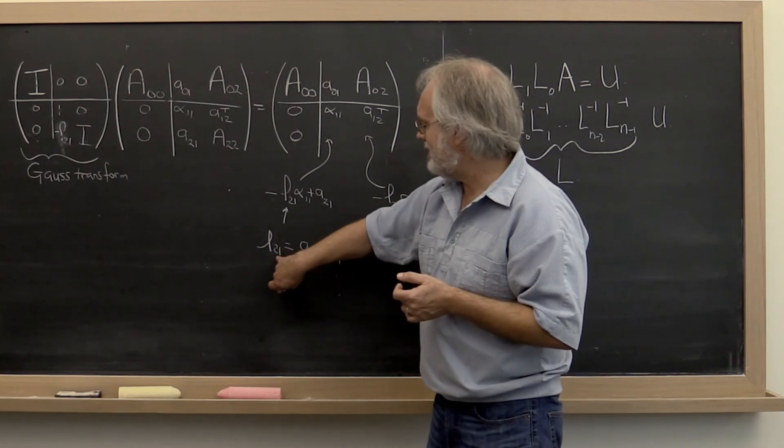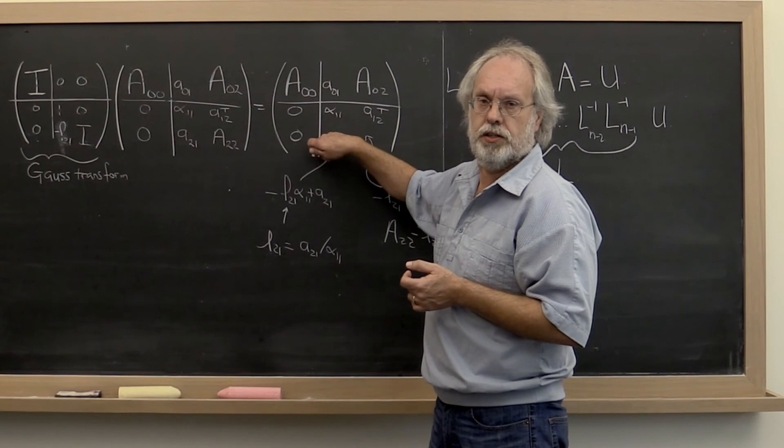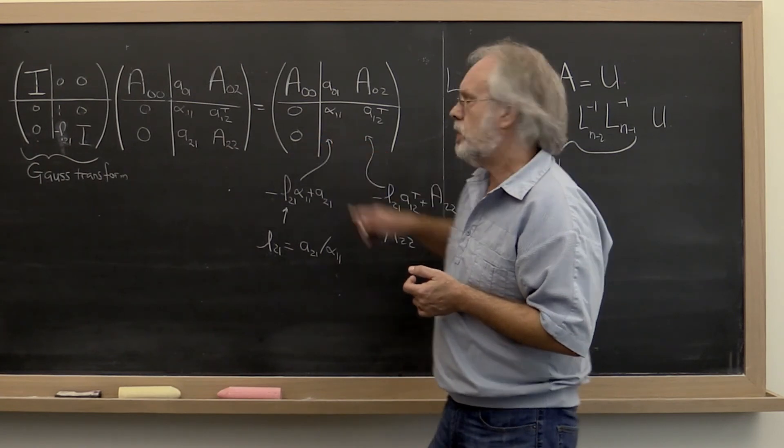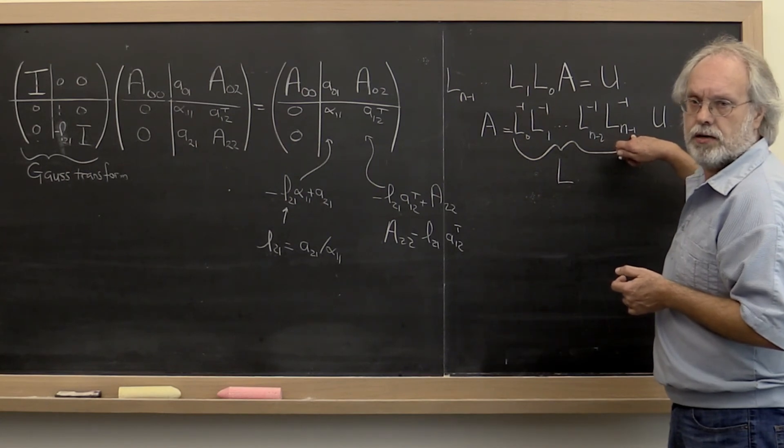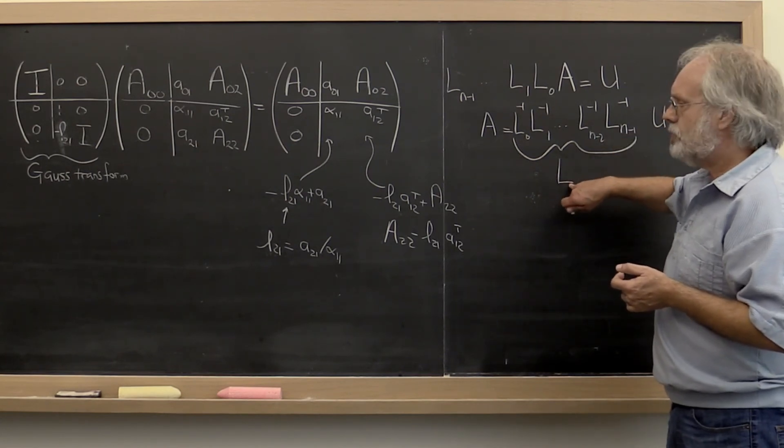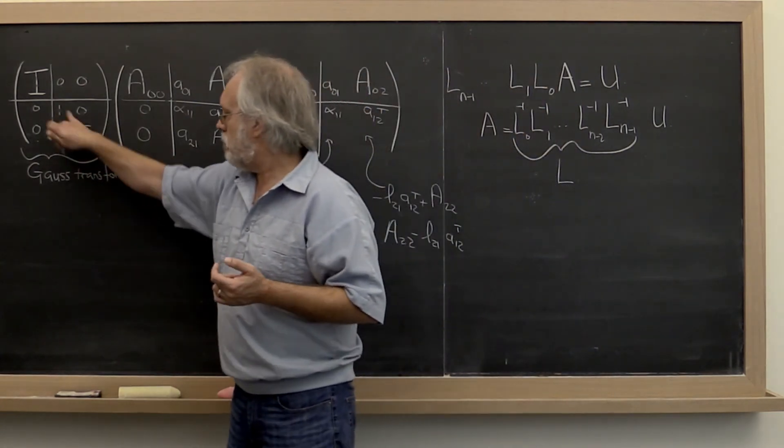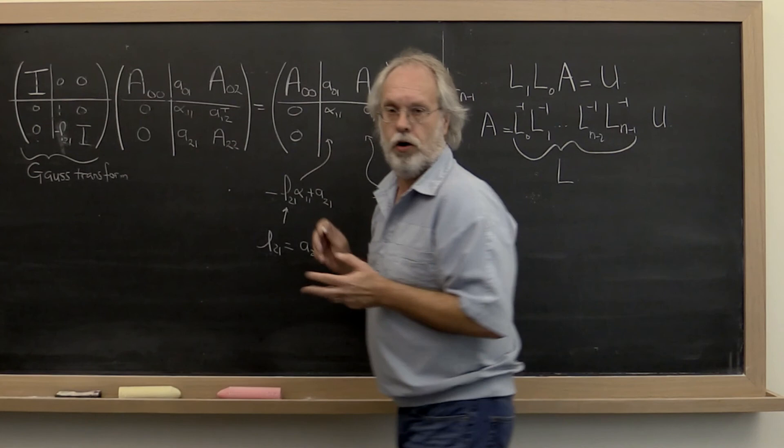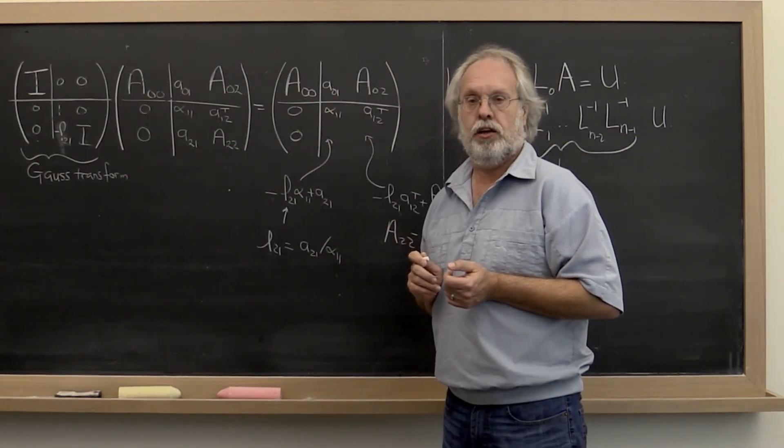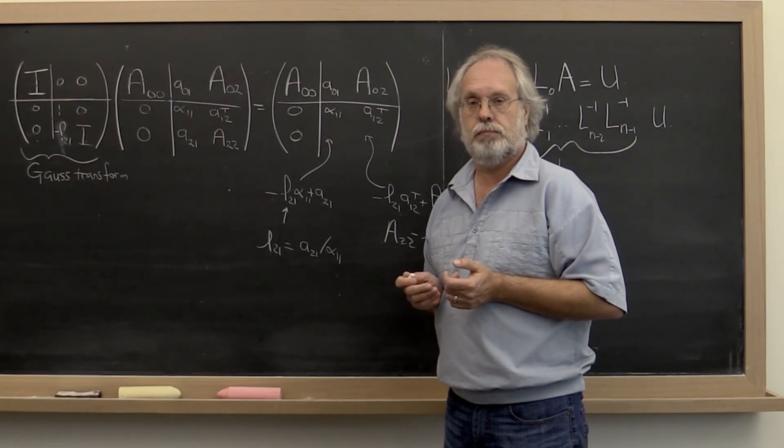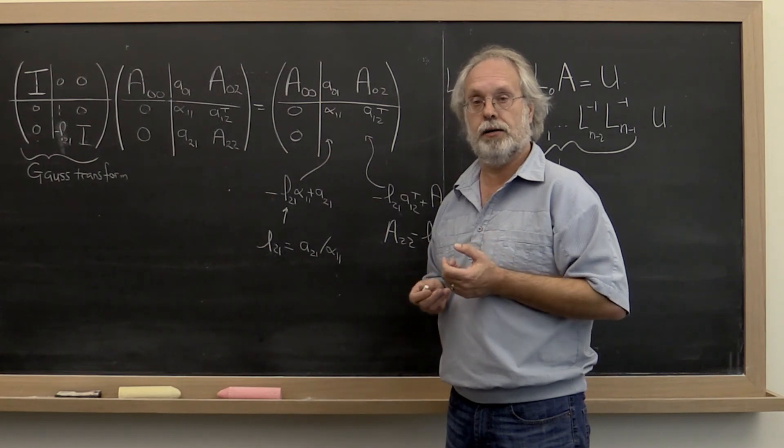We created our L by simply taking the L2, 1 and placing it over the zeros that you computed. So it must be the case that if you multiply all of these inverses of the Gauss transforms together, then the L that you get should be the one that you get by simply taking these multiplier vectors that you compute it along the way and placing them in the correct position in the unit lower triangular matrix. Well, let's see if we can prove that through a couple of homeworks.